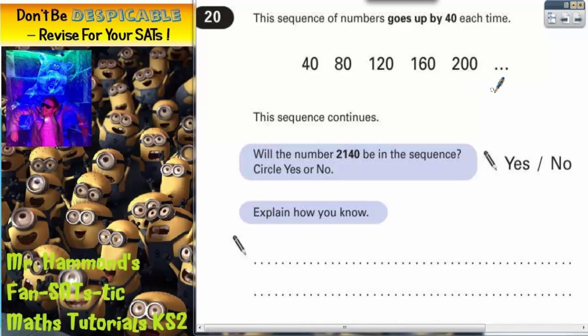And that's shown by these three dots here. It says, will the number 2140 be in the sequence? Circle yes or no and explain how you know.